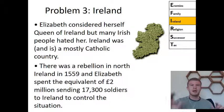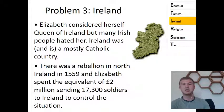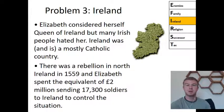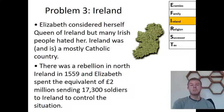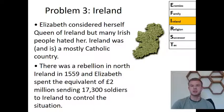Problem three is Ireland. Elizabeth considered herself Queen of Ireland, but many Irish people absolutely hated her, mainly because Ireland was a mostly Catholic country and they didn't want a Protestant like Elizabeth leading them. There was a huge rebellion in North Ireland in 1599. Elizabeth spent the equivalent of £2 million in today's money, sending 17,300 soldiers to try and control the situation — at that point the most soldiers ever sent overseas. So it was a very expensive problem for Elizabeth to fix.